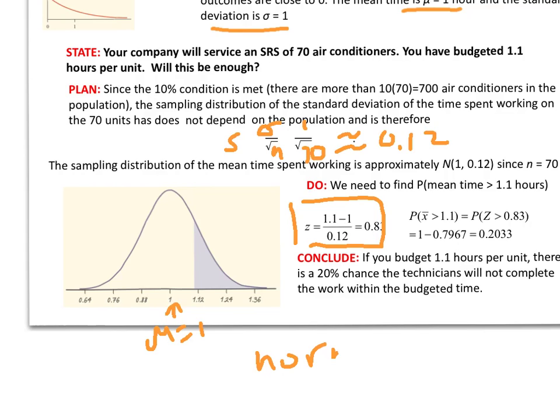Also, you remember, you can use normal CDF feature on your calculator, where you type in your starting point, which is 1.1 to infinity, where your mean is 1 and your standard deviation is 0.12. And it will give you the same percentage, 20.33%. So now we've got to do the conclude. So we budget 1.1 hours. There's a 20% chance that the technicians will not be able to complete the work within budgeted time. 20% of the time, they're going to need more time. 80% of the time, no problem. So you notice there's the four conditions: state, plan, do, and conclude, in their entirety. Make sure you've copied this down in your notes. See you in class next week.